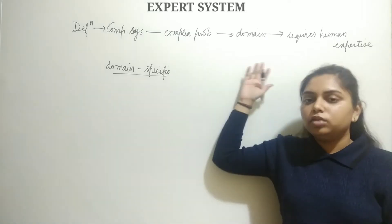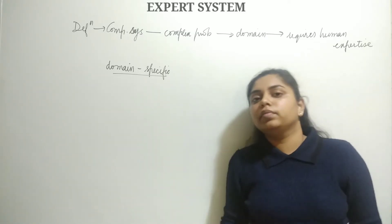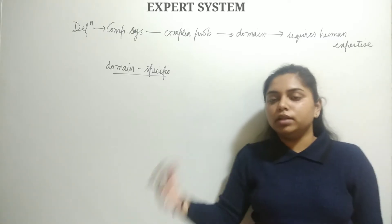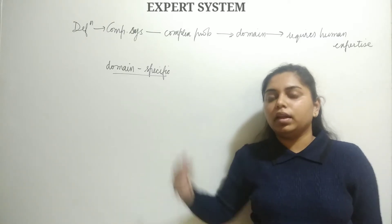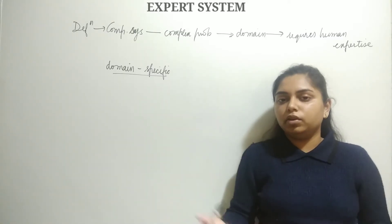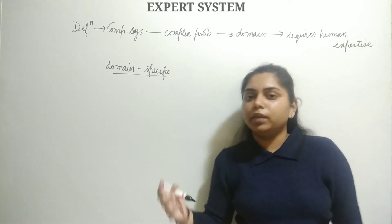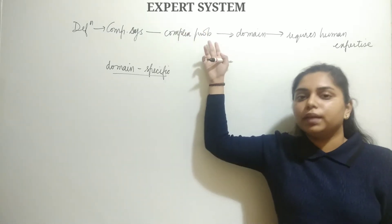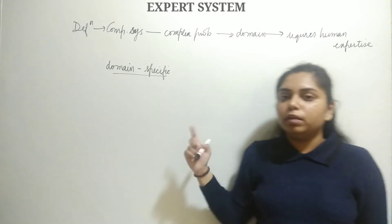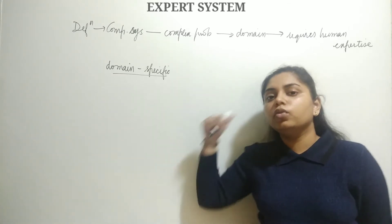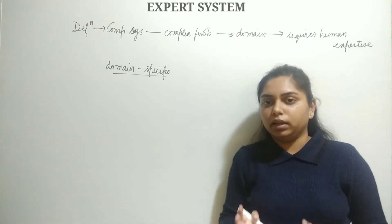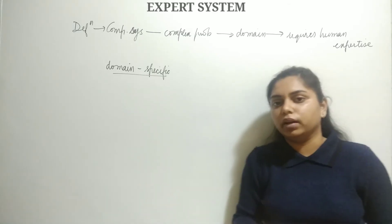Expert systems use a knowledge base — knowledge is stored within it. We will also see how knowledge is acquired in knowledge engineering, how it is represented, and how the system uses it to solve complex problems in a particular domain.